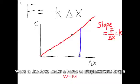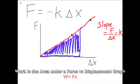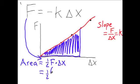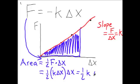Work is the area underneath a force versus displacement graph, and we can use this to calculate the amount of potential energy in a spring. The area of this shape is a triangle, and the area of a triangle is one half base times height. The height is the force and the base is the distance stretched or compressed, giving us one half times force times change in x. Substituting Hooke's law for force, we wind up with one half k x squared as the formula for the potential energy stored in a spring.